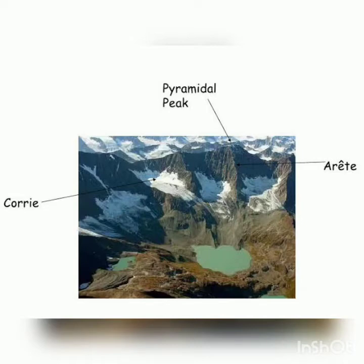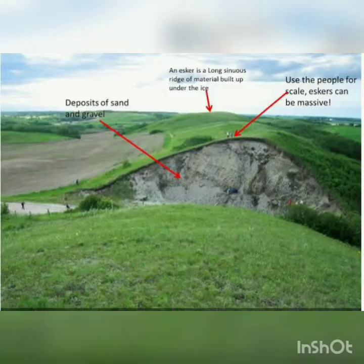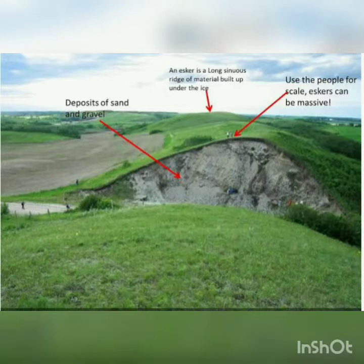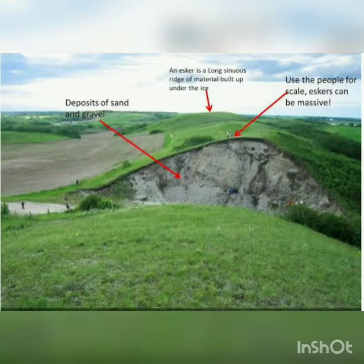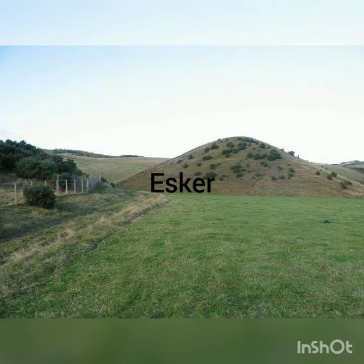Moving on to the next landform: the esker. An esker is a long sinuous ridge of material built up under the ice. As you can see in the pic, it's really clear. It's a ridge-like structure.